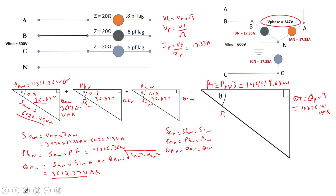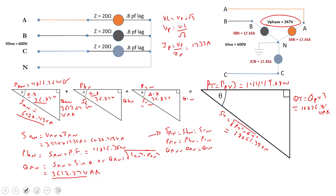For S total in an unbalanced circuit we'd use the Pythagorean formula: square root of P_total squared plus Q_total squared, which comes to about 18,061.35 VA. But because all phases are at the same power factor, same angle, and same magnitude, I can also say S total equals S_phase times three.